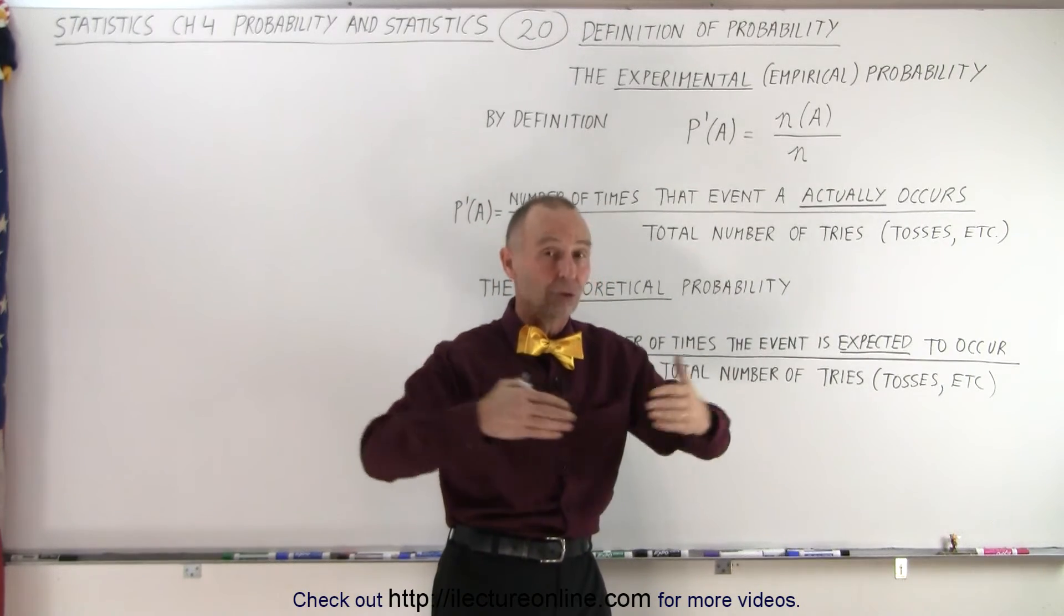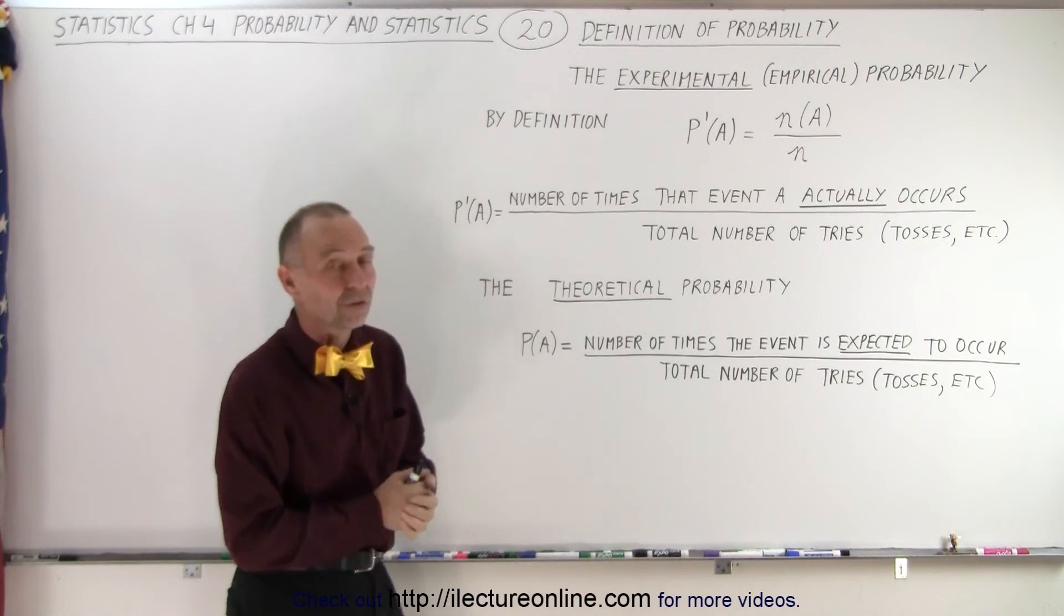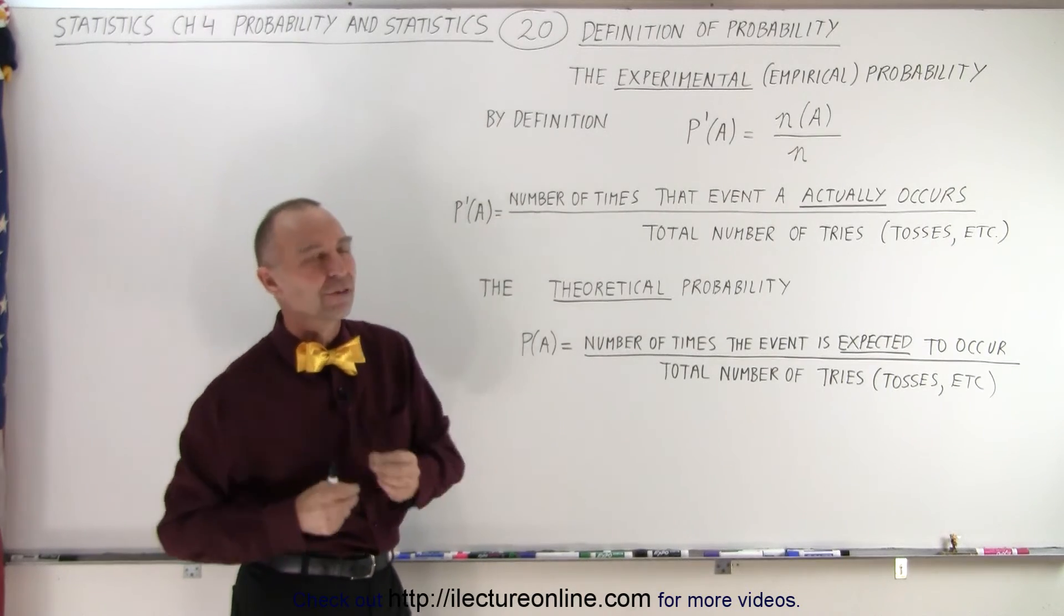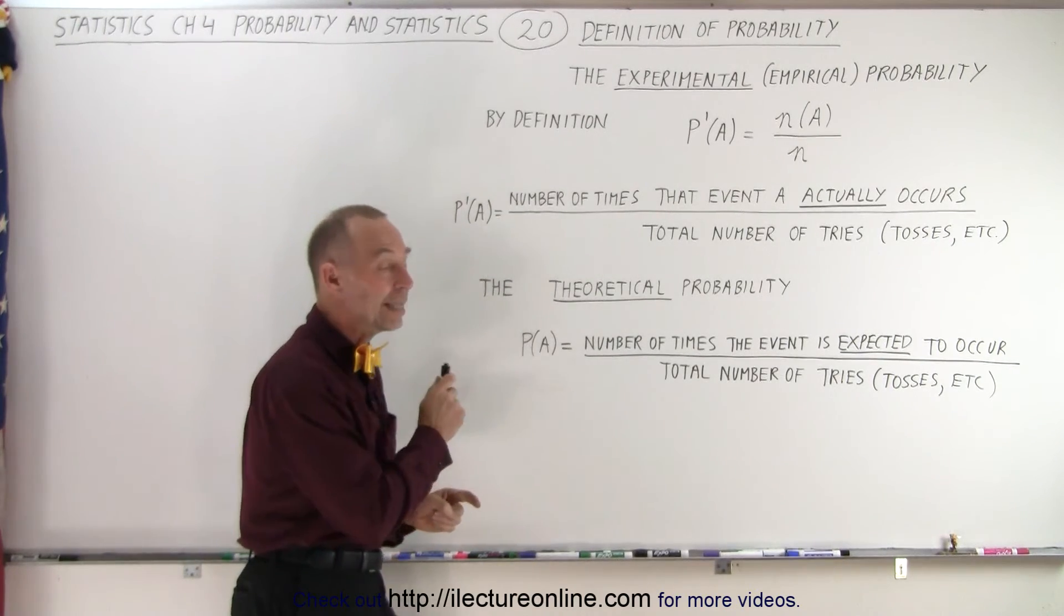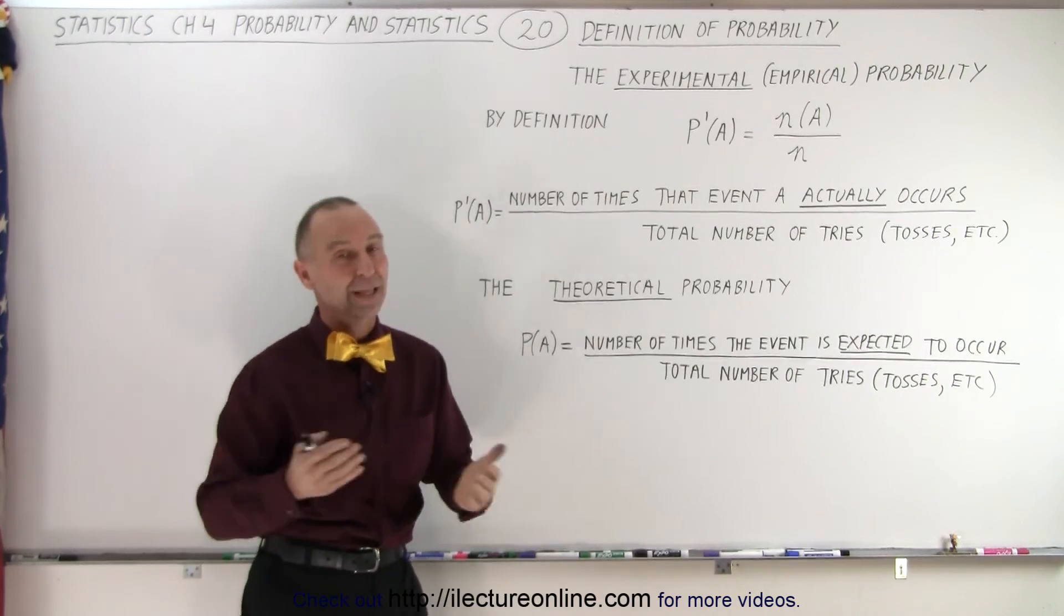In both cases, we're divided by the total number of experiments, or the total number of tries or tosses, and so forth. And that's the difference between those two, again, by definition. And that's how it's done.